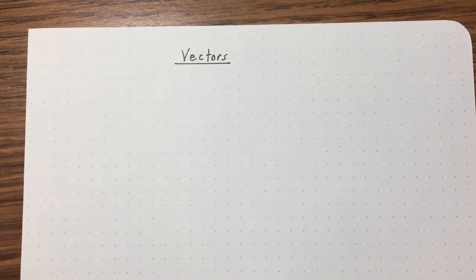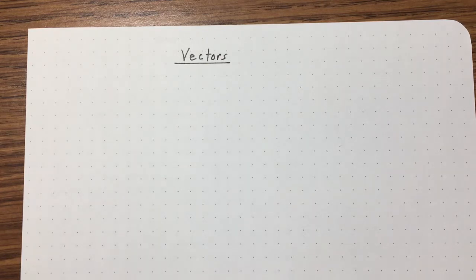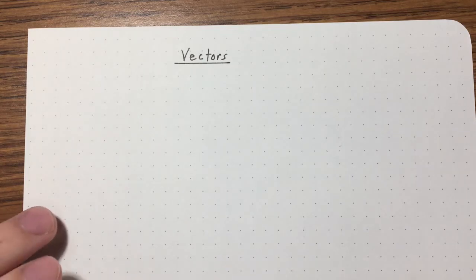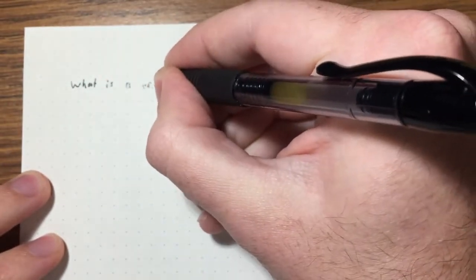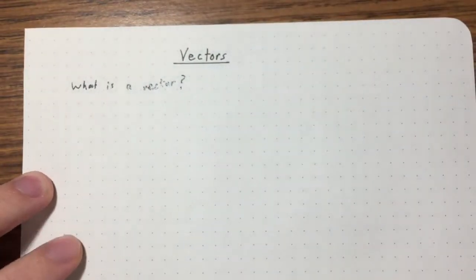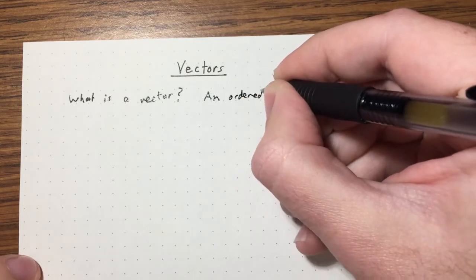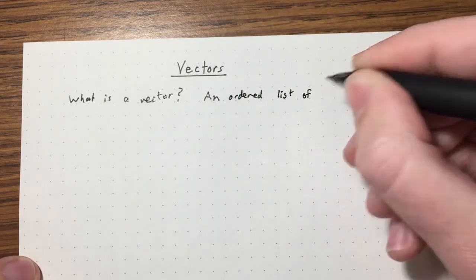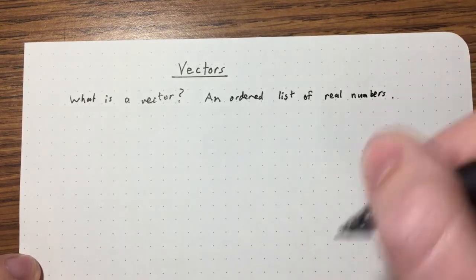In this lecture we're going to talk about vectors. Vectors are one of the most fundamental objects in linear algebra. They're going to allow us to view linear systems in a totally new way than we did before — there's a new geometric interpretation we're going to introduce today. So, what is a vector? A vector is nothing more than an ordered list of real numbers.